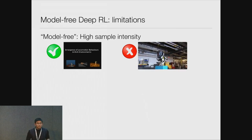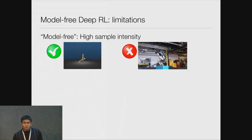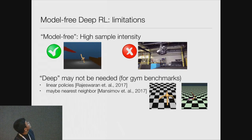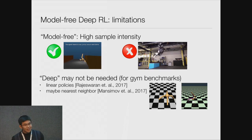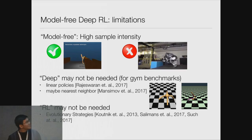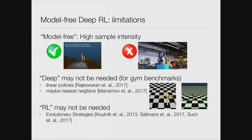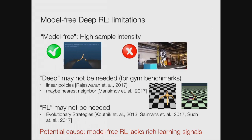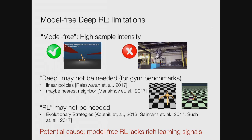The first limitation is that many model-free algorithms are very sample-intensive. They can solve problems in simulation with amazing parkour movements, but training a real-world robot to do that is almost impossible. Also, some continuous control benchmarks we thought were difficult can actually be solved without deep neural networks — using linear policies or random features. Even worse, random search can solve many previously-considered difficult benchmark problems. The root cause is that classic model-free RL lacks rich learning signals.